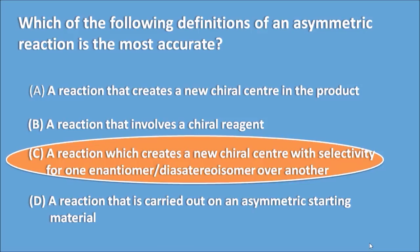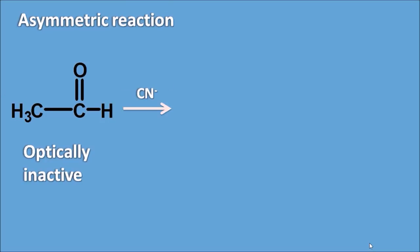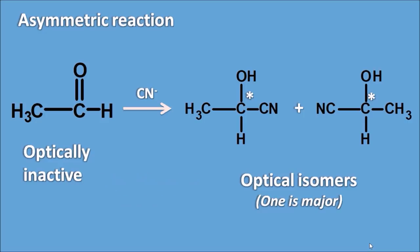For the explanation, let us take acetaldehyde, which is optically inactive and has no chiral carbon. Suppose it undergoes a nucleophilic addition reaction with cyanide — it can give two products with two configurations, both having a chiral carbon and thus being optically active. These are mirror images of each other; they are optical isomers and enantiomers. But one is formed as the major product and the other as the minor product.